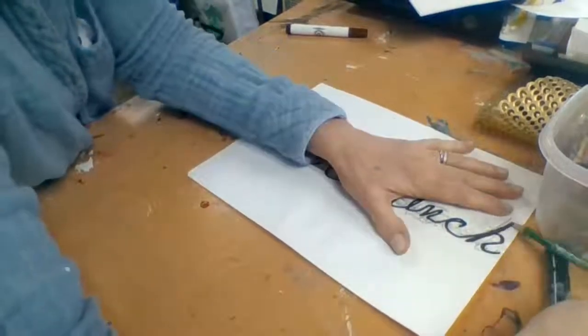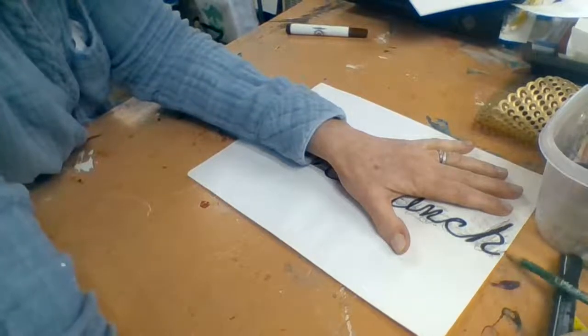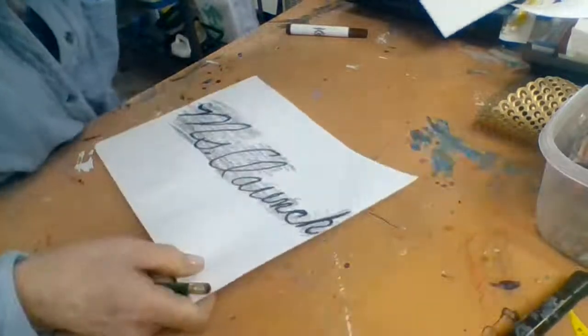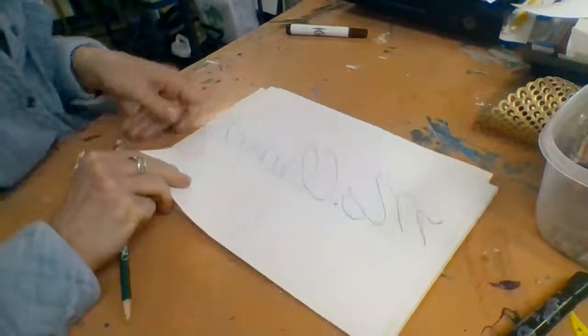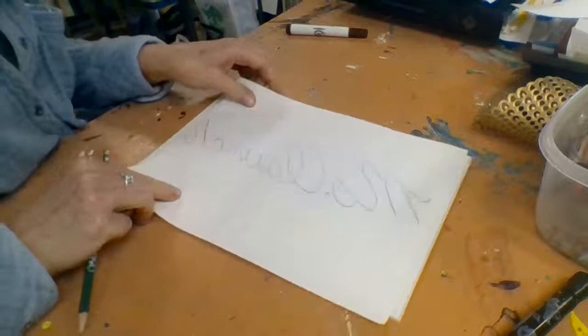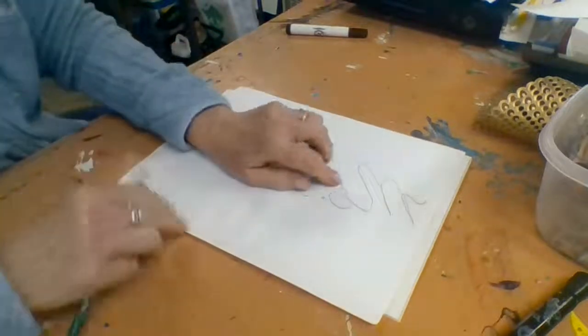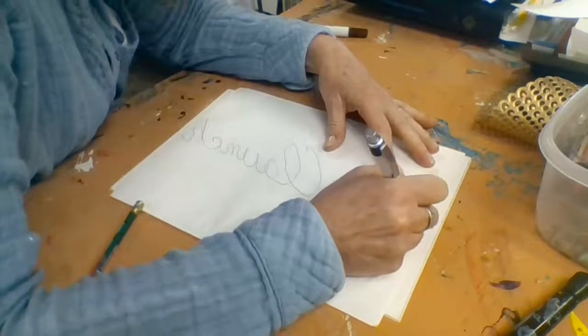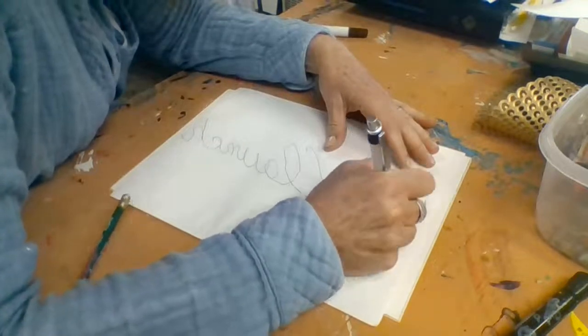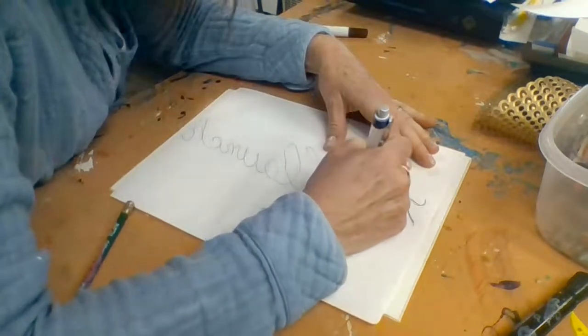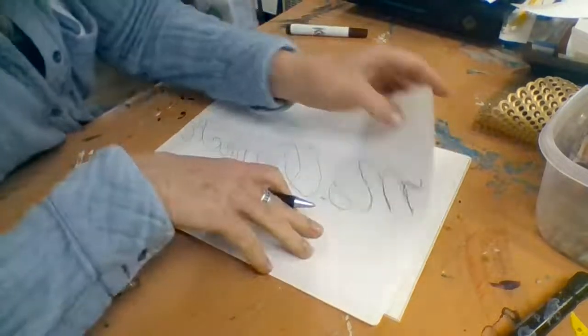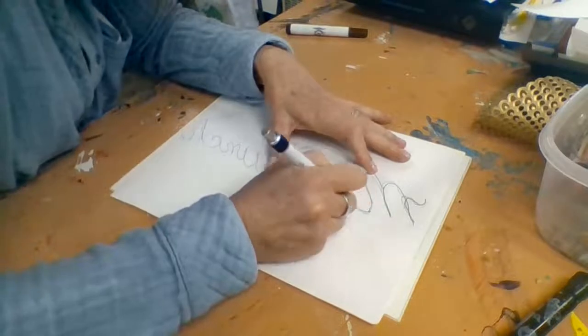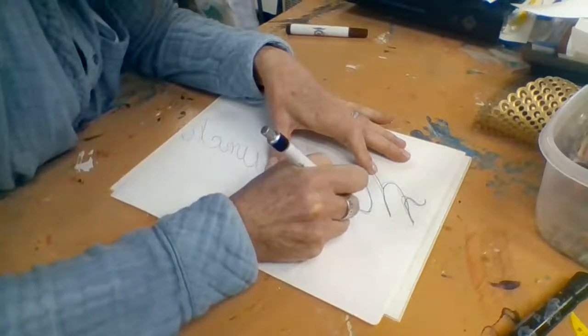And then when you flip this over, you can trace over it. So I can see it on the back. And then I'm going to trace over it. I'm going to use a ballpoint pen. Let's see if this is working. And you just need it faint enough so that it shows up. So I can just barely see it, which is good enough because I can trace back over it.